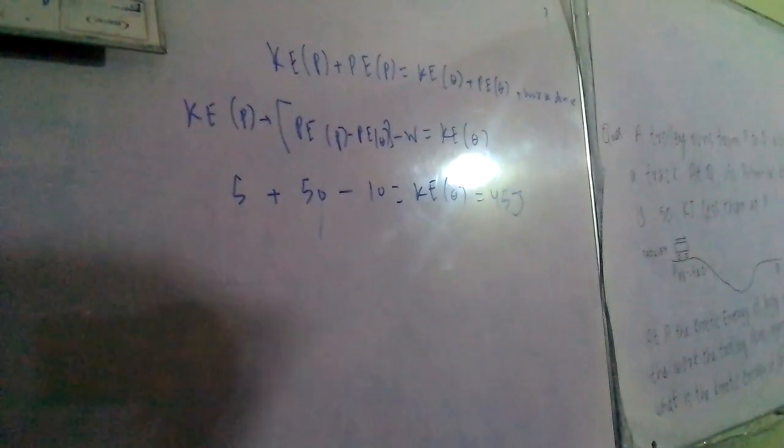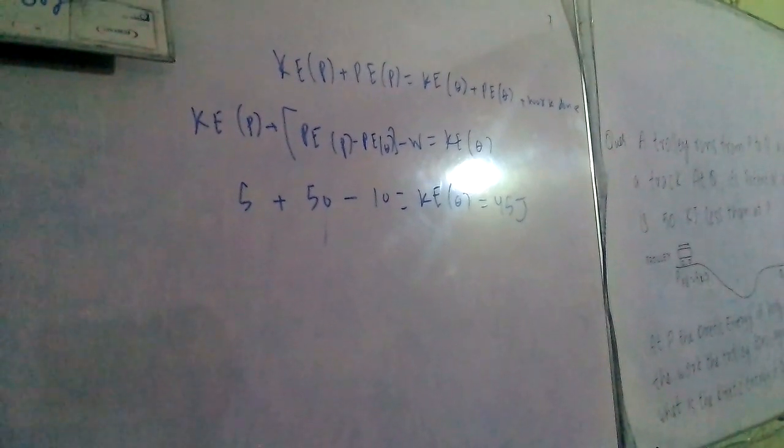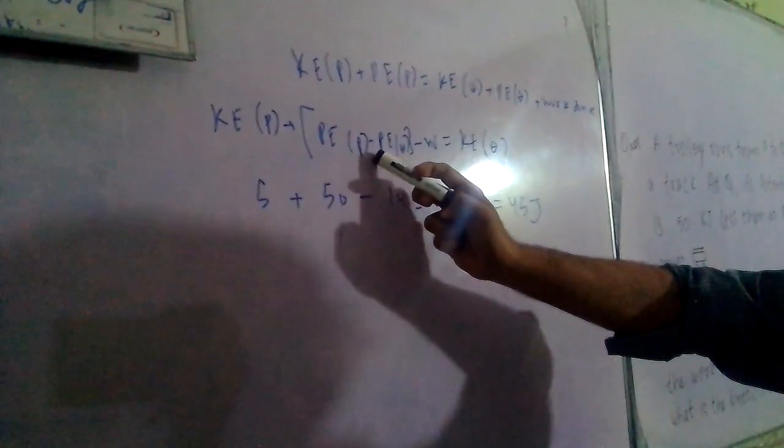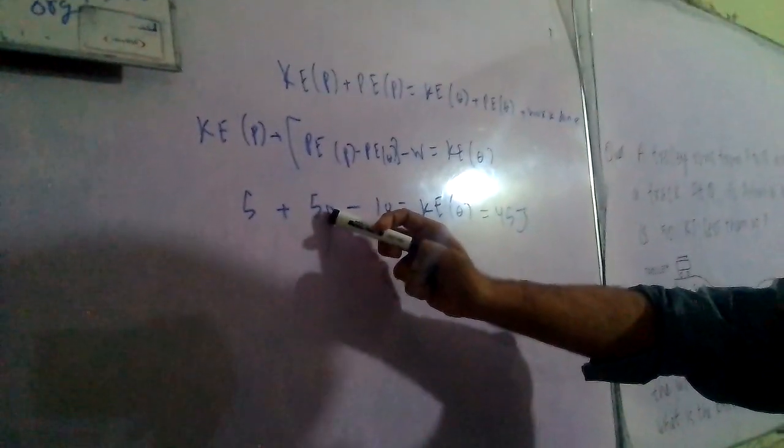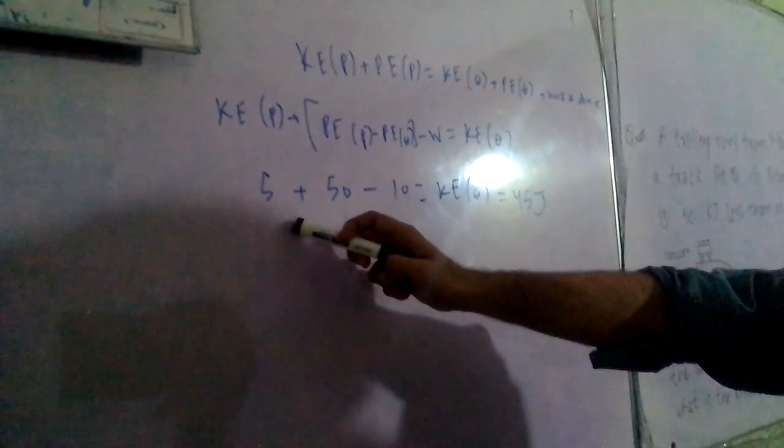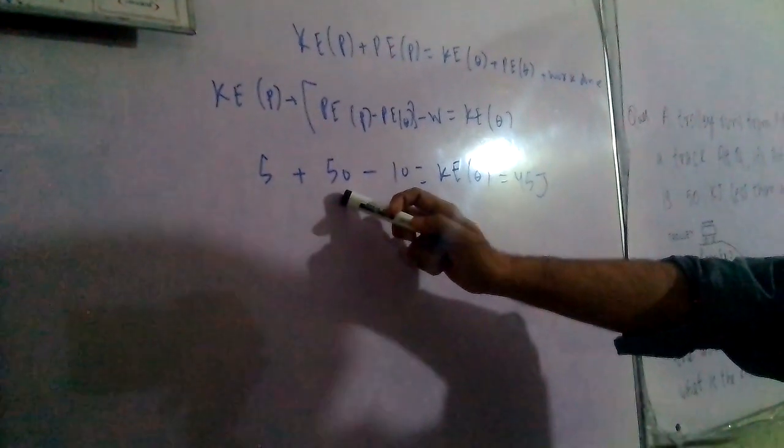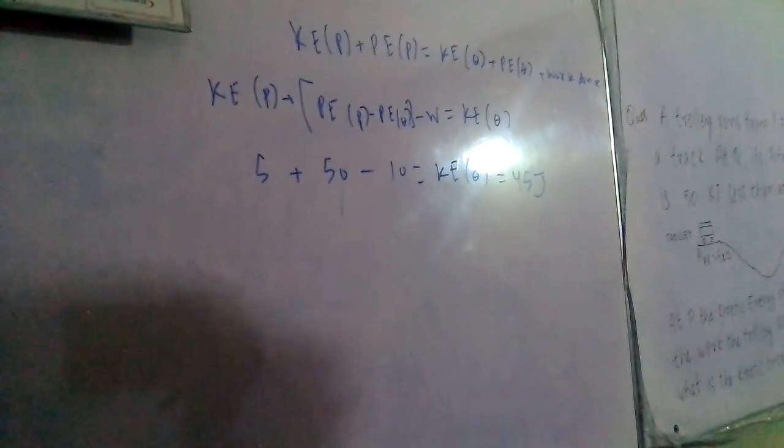The potential energy difference is given as 50. So, PE at P minus PE at Q equals 50. Now, PE at P is 5. 5 plus 50 is 55, minus 10 is 45.